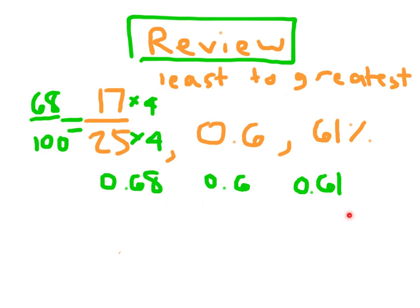So, least to greatest. Which of these comes first? And we have to remember to write it as a what? Decimal! Because that's how it was originally given to us. So, we write out 0.6.